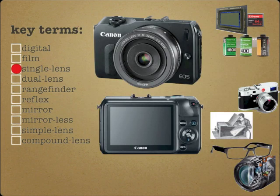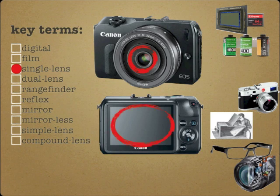Single lens — our first hyphenated key term — simply means that the image is previewed and captured by one lens. The viewfinder image is electronically converted and shown on the viewfinder screen, much like viewing a television or computer monitor. This Canon is not considered a DSLR. It has the DSL — the digital single lens — but not the R, which we'll find out about in just a moment.